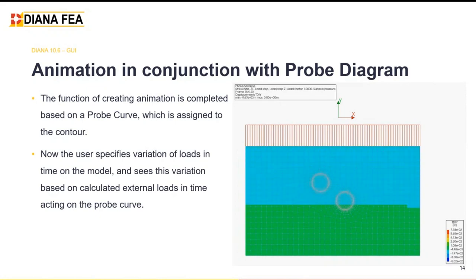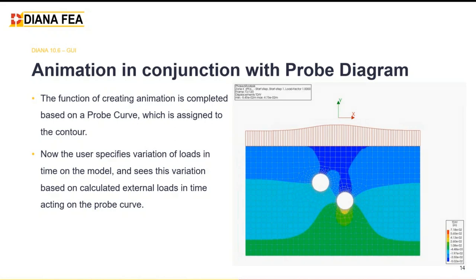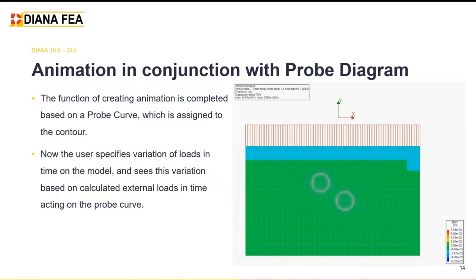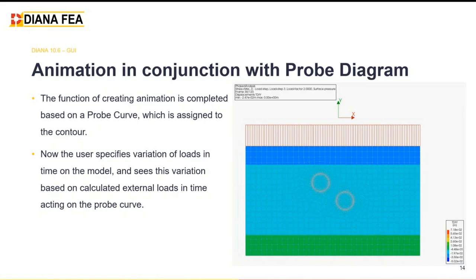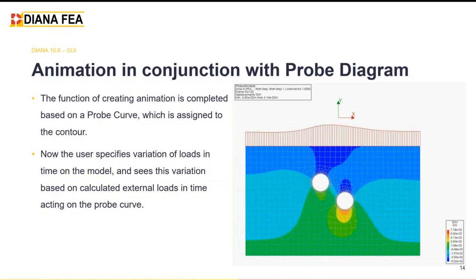A valuable new feature for probe curves is the ability to generate animations showing the variation of the contour plot together with the change in the probe curve. As shown in the model on the right — a simulation with two tunnels — both the contour plot and probe curve change during time or as the load changes. Initially the probe curve is constant, but as soon as we start removing soil at the tunnel location, the probe curve shows a variation along the X axis.